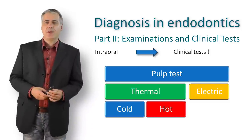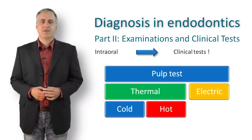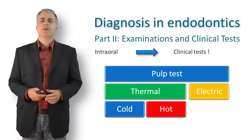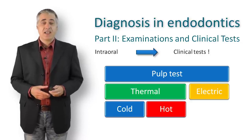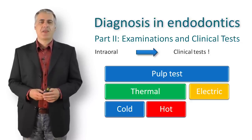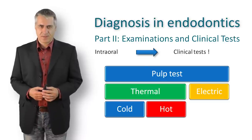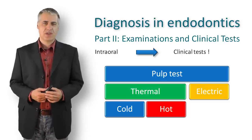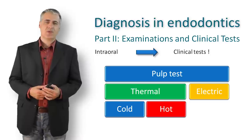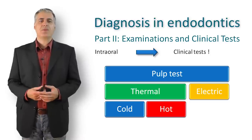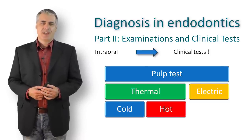The electric pulp test has almost similar capabilities to determine vital pulp tissue as the cold test, but has several limitations: the electrode must be in contact with natural tooth structure, and in addition the tooth has to be absolutely dry, which can be achieved by isolating it with rubber dam.